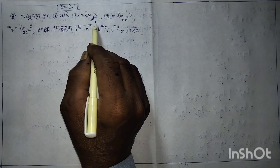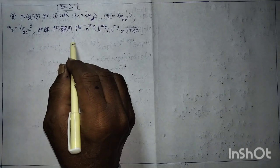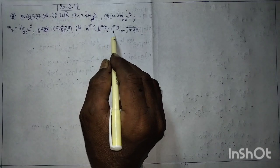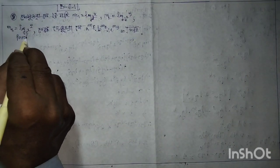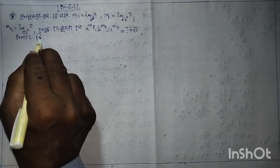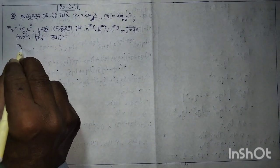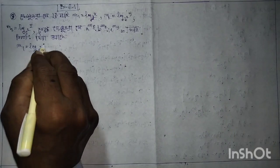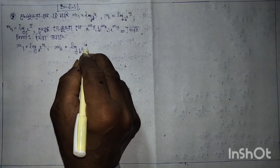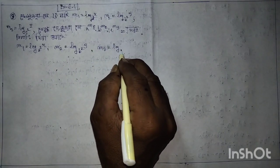m1 is equal to log x base a, m2 is equal to log y base b, m3 is equal to log z base c. These are the given definitions for the proof.